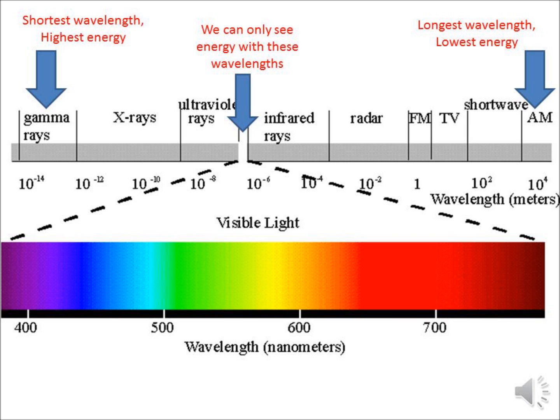Moving to the left of visible light, beyond purple, you get ultraviolet rays — the things that come from the sun that can cause cancer and other skin problems, which is why we wear sunscreen. Further to the left are X-rays and then gamma rays. The best source of gamma rays comes from the sun and other stars. These have the shortest wavelength; the waves are so close together that there is a tremendous amount of energy in gamma rays.